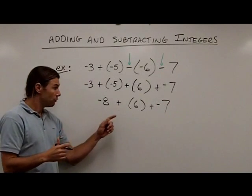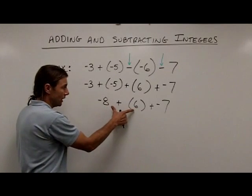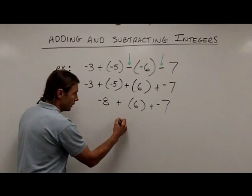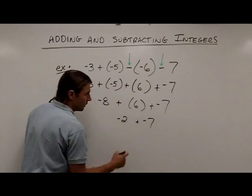Next step. A negative 8 plus a positive 6. Notice that these are different, or opposites, so cancellation is going to occur. I have more negatives, so I'm going to end up with a negative 2.